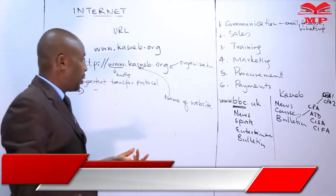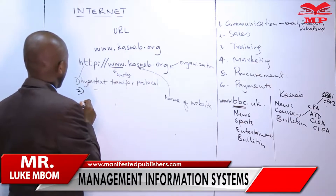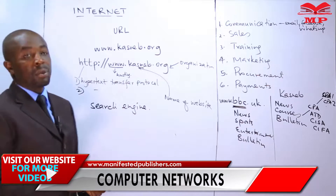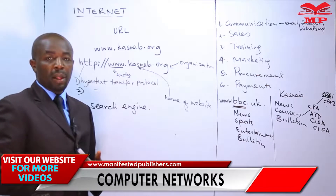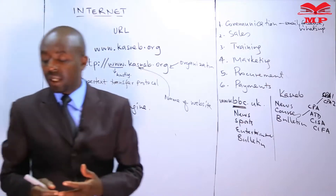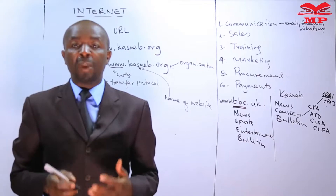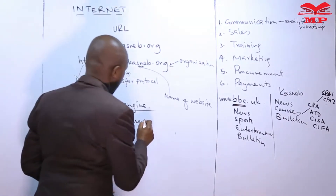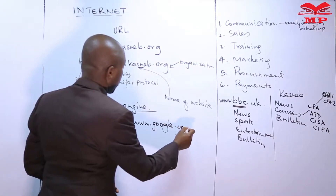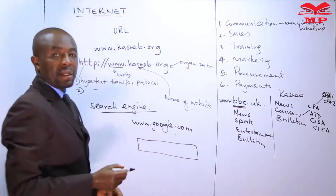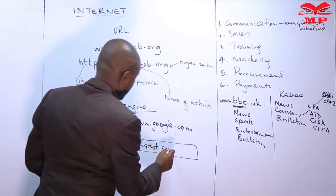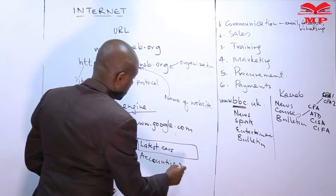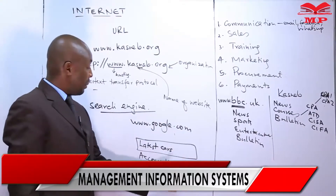The Uniform Resource Locator is a path where you can type what you want. Maybe you want 'latest cars in the world,' or maybe you want 'accounting rules.' When you type 'accounting rules' it will take you to so many links, so many hyperlinks on the internet.